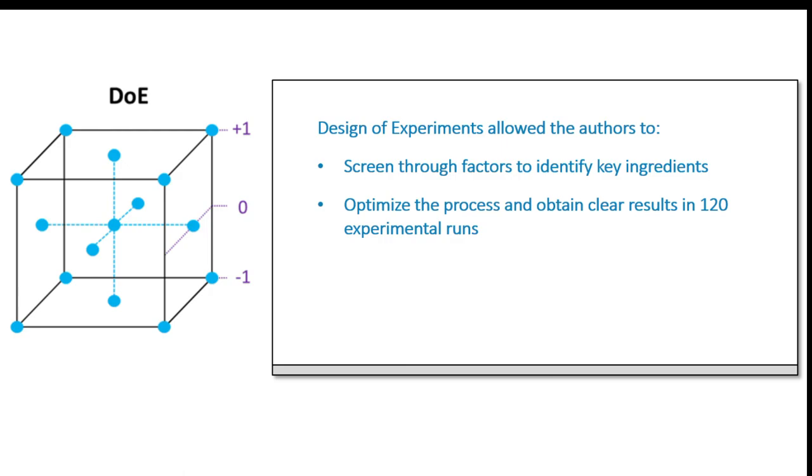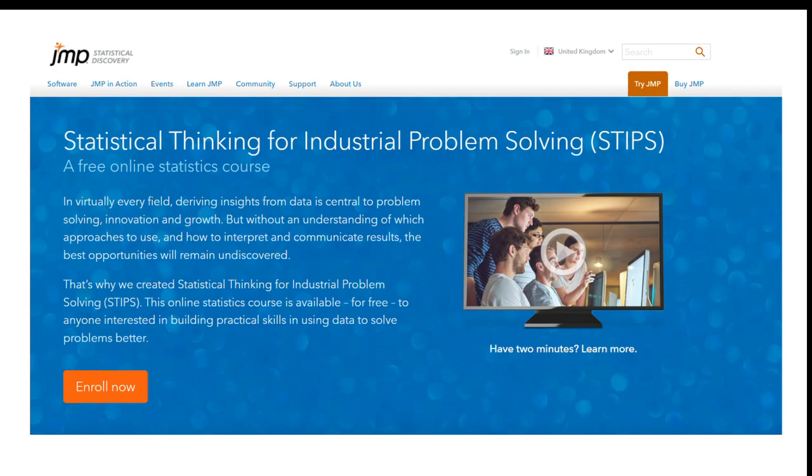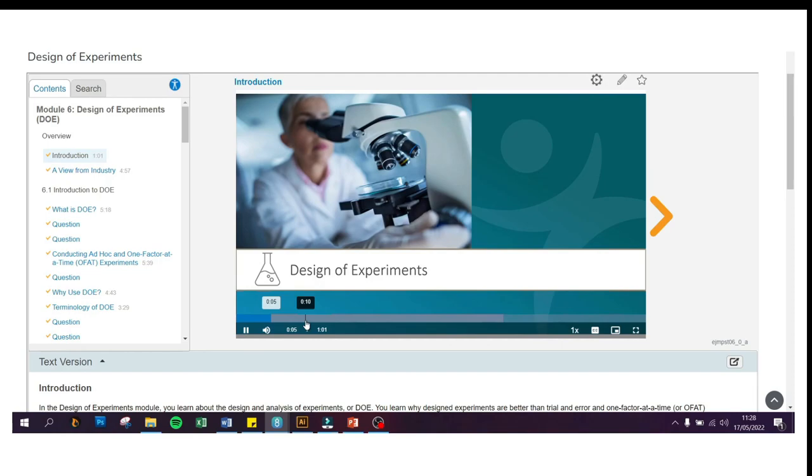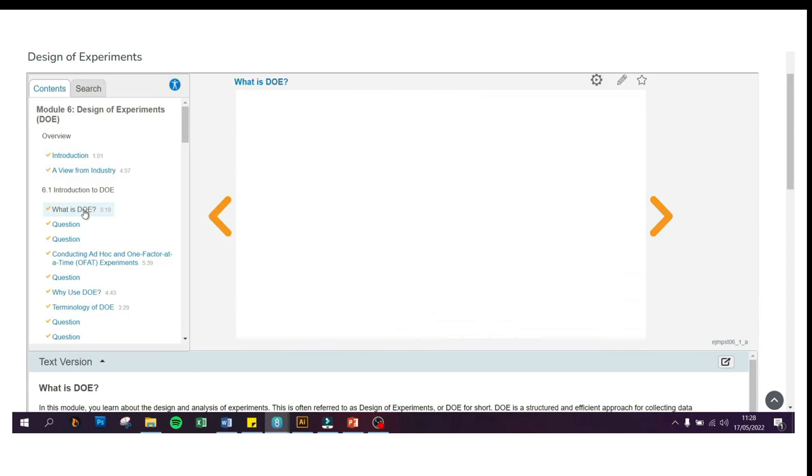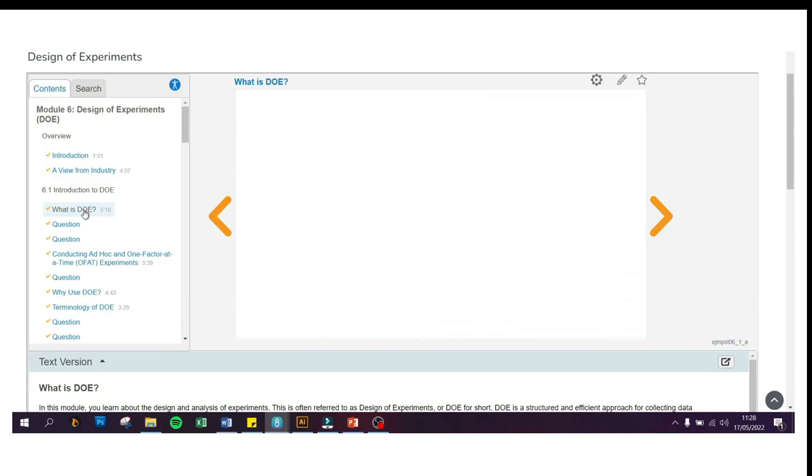Altogether, DOE allowed the authors to identify key ingredients and obtain clear results in just 120 experimental runs. For more information and learning about DOE, you can click on the description below which will link you to one of our STIPS modules. STIPS is a free online statistics course developed by JMP that you can take and learn at your own pace. We have a dedicated module for DOE which will dive deeper into the terminologies, experimental designs, and analysis for your experiments.